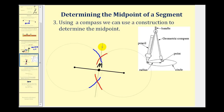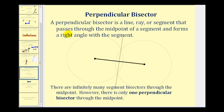There's also something special about the segment drawn through the intersection of these arcs — it's the perpendicular bisector of the segment. A perpendicular bisector is a line, ray, or segment that passes through the midpoint of a segment and forms a right angle with it. This dashed segment bisects the original segment into two congruent parts and forms a right angle. We can convert it into a ray or line if desired. There are an infinite number of segment bisectors through the midpoint, but there is only one perpendicular bisector — the one that is perpendicular to the segment.